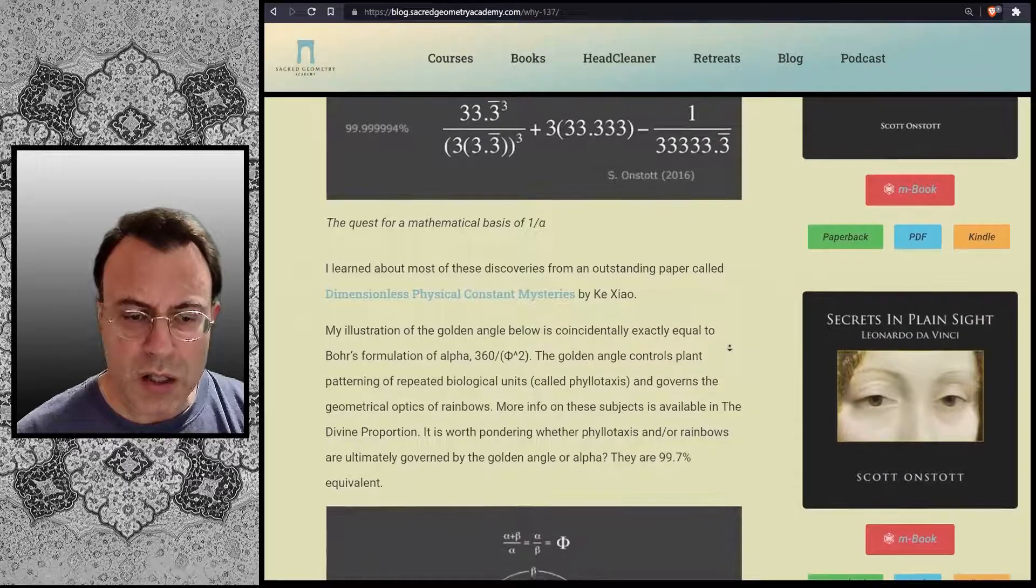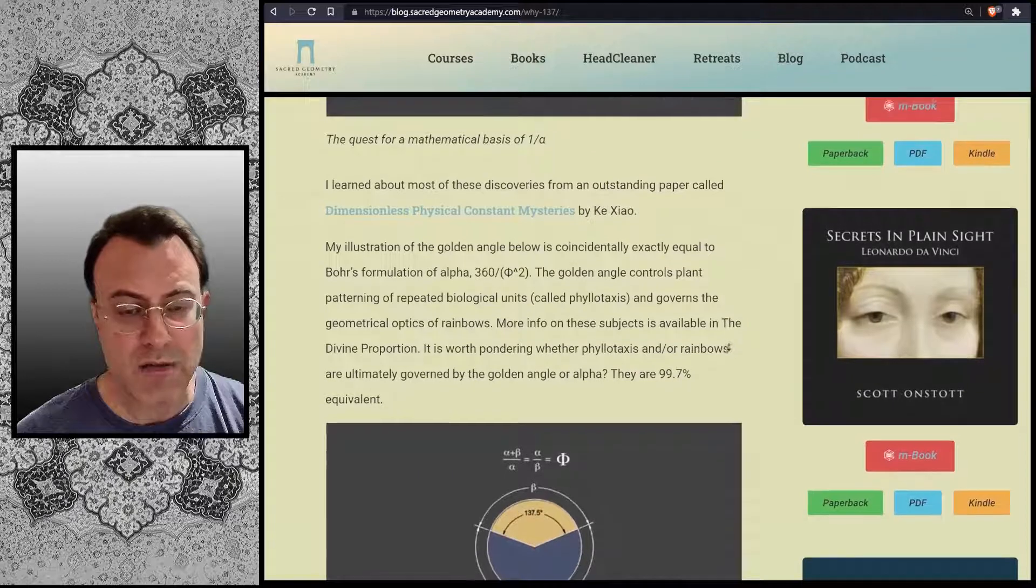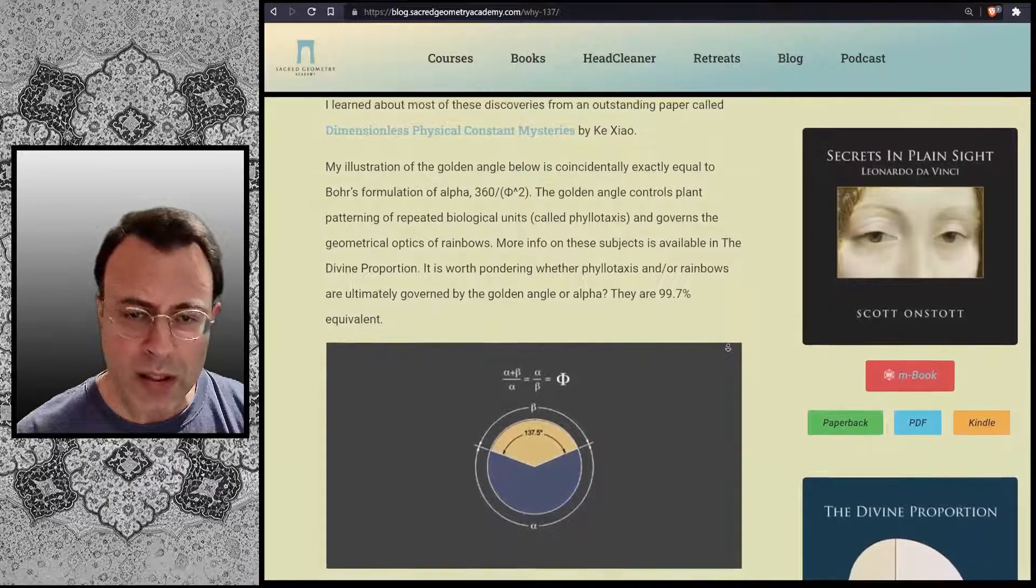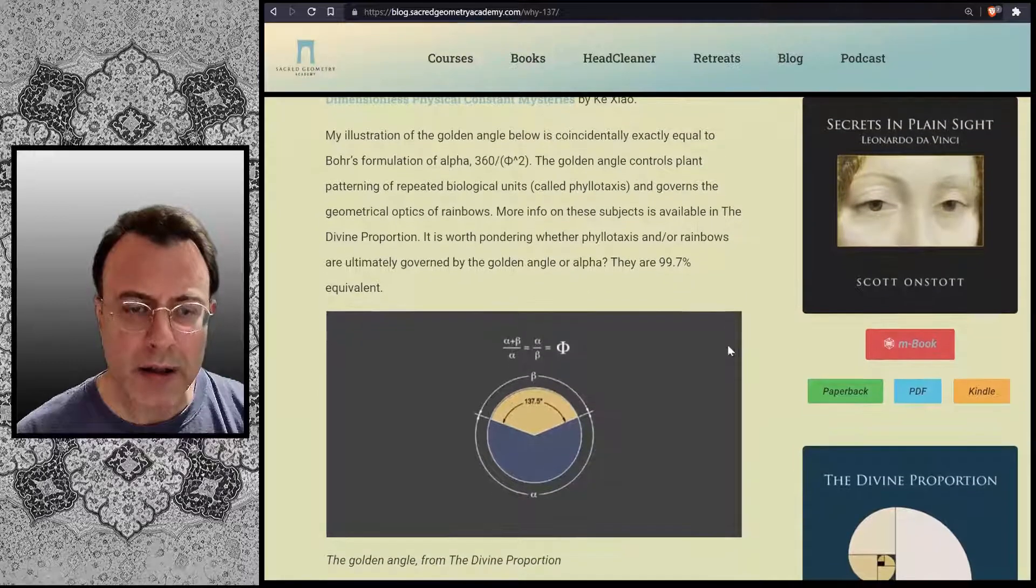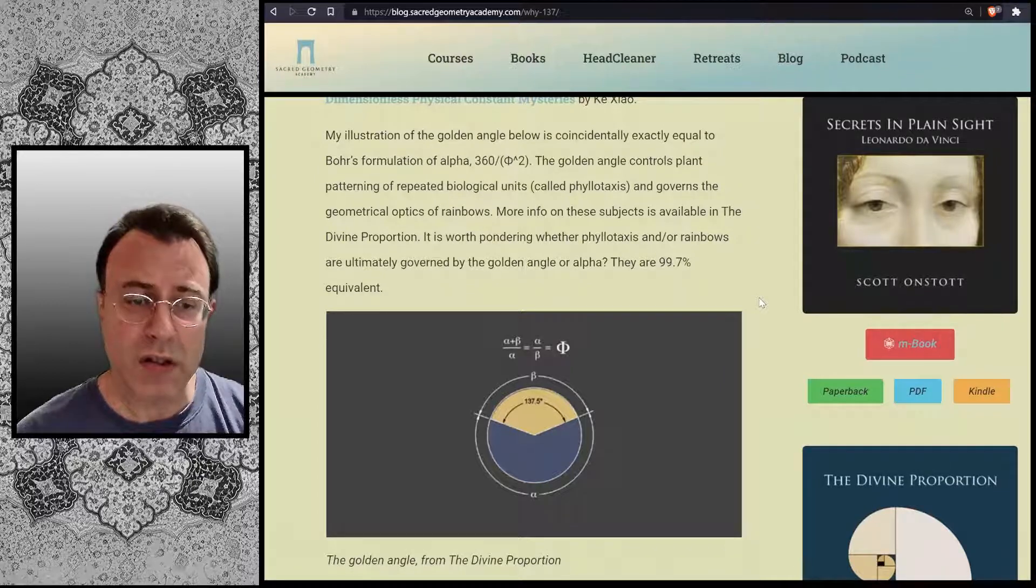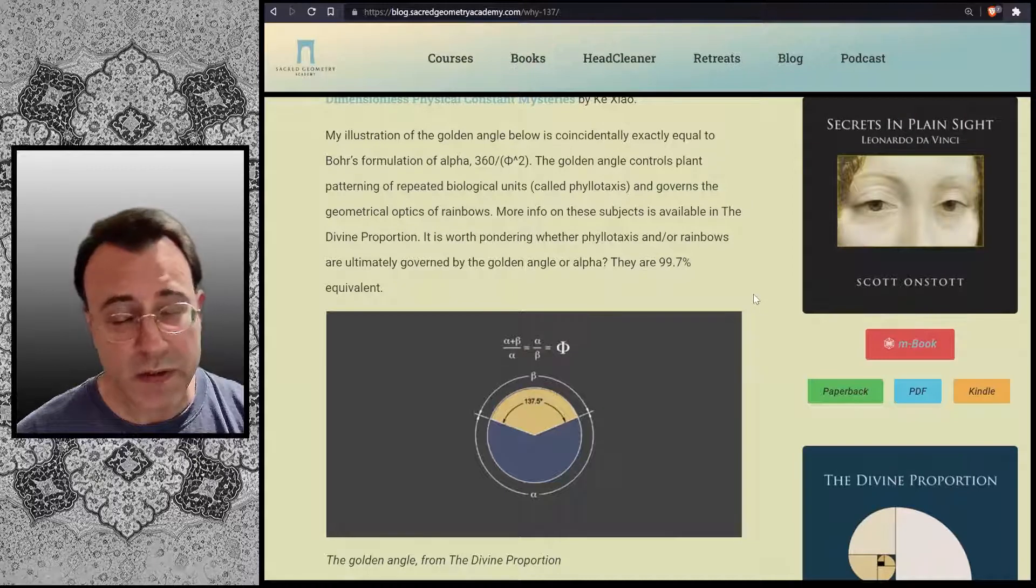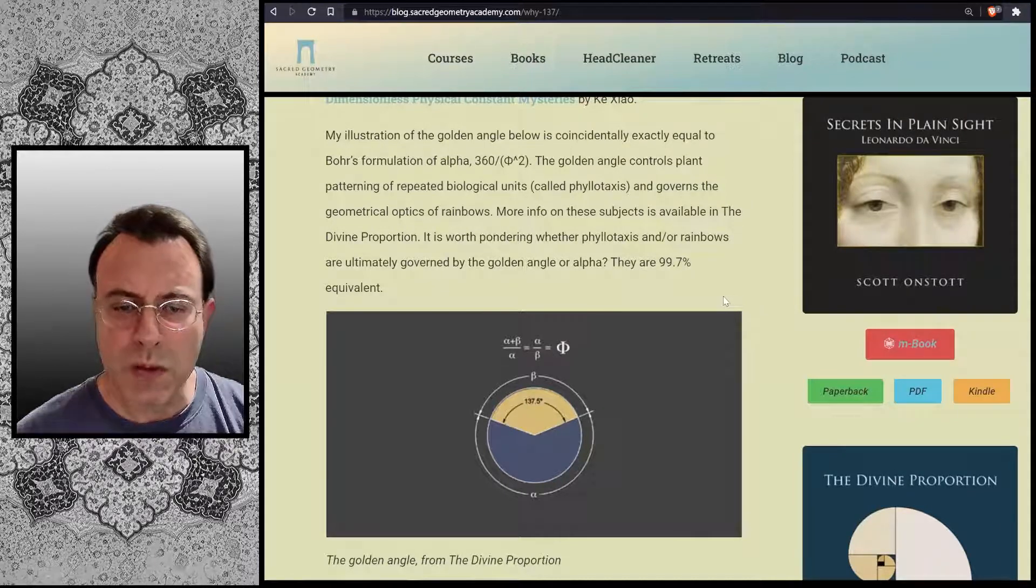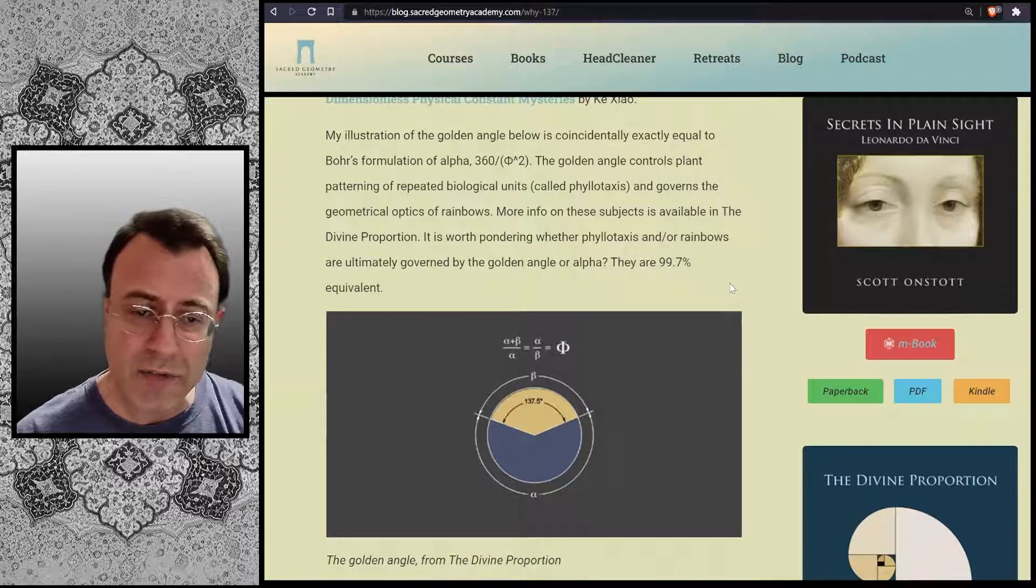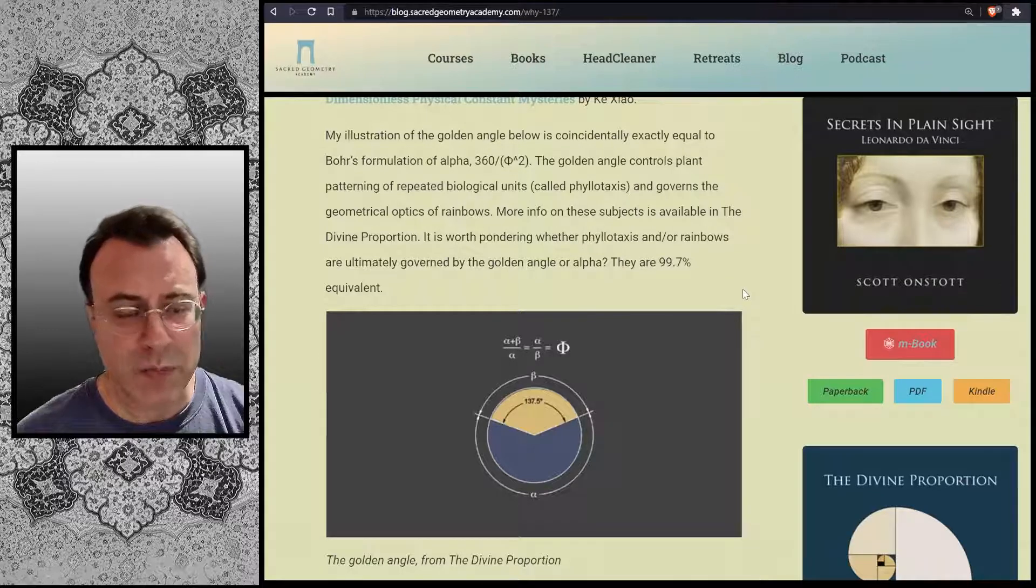My illustration of the golden angle below is coincidentally exactly equal to Bohr's formulation of alpha, which is 360 divided by phi squared. The golden angle controls plant patterning of repeated biological units called phyllotaxis, and governs the geometrical optics of rainbows. More info on these subjects is available in The Divine Proportion, my book. It is worth pondering whether phyllotaxis and or rainbows are ultimately governed by the golden angle or alpha. They are 99.7% equivalent.